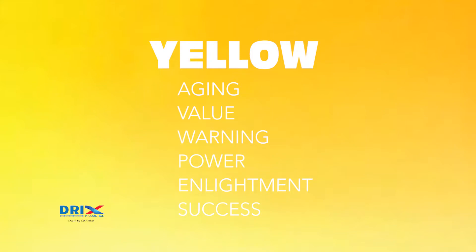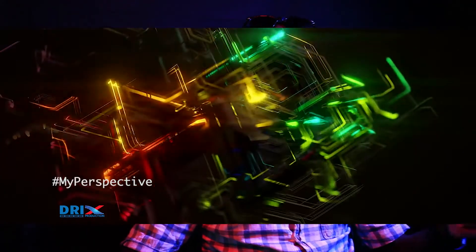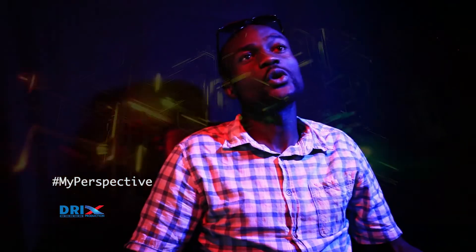Another color I'll talk about is yellow. Yellow is a color of aging, value, power, enlightenment, and success. Most babies tend to cry when they see yellow, so it's a color for showing aging or babies growing. Gold is yellow, so if you want to show a scene of richness, power, enlightenment, or success, yellow is the best color.